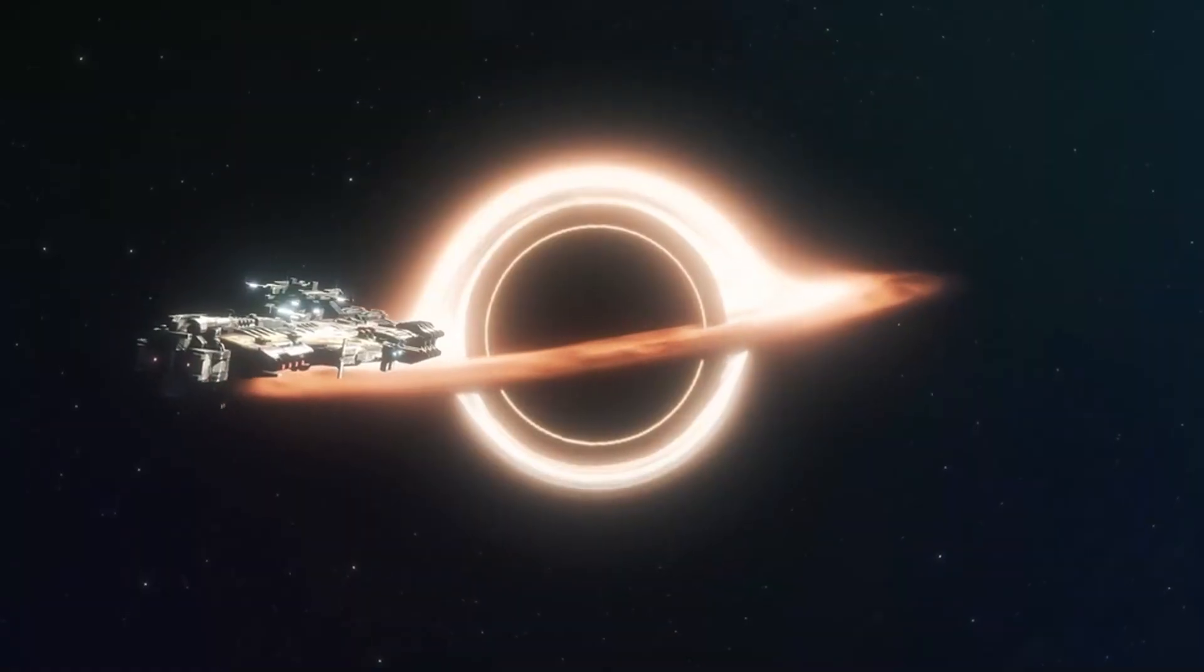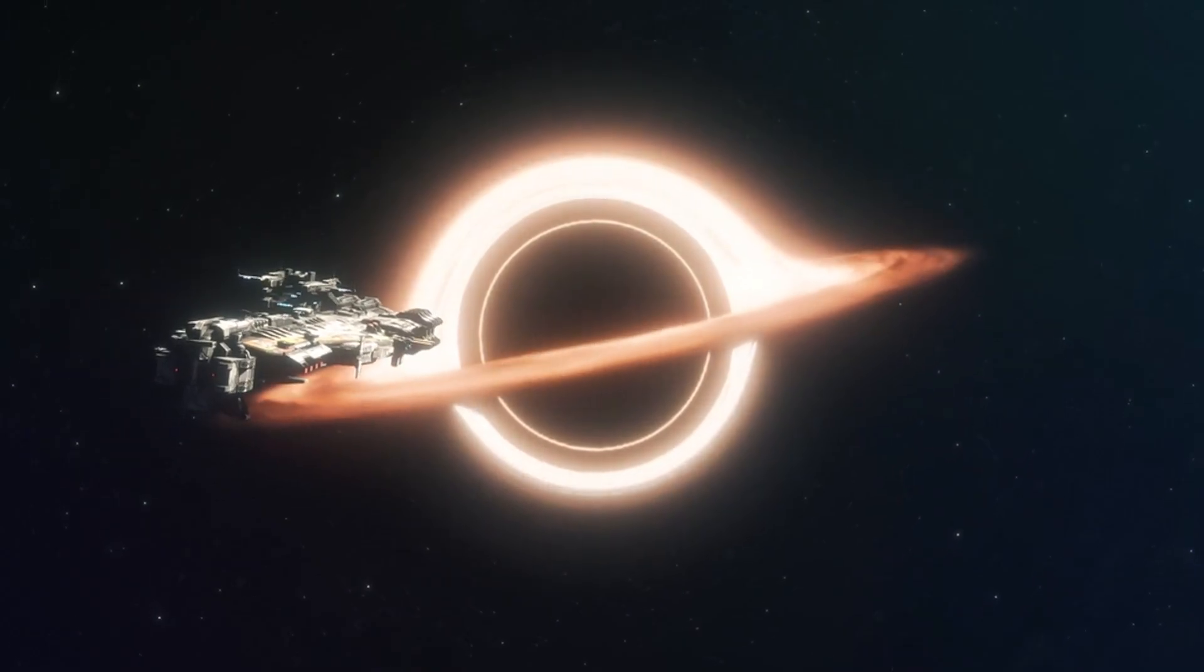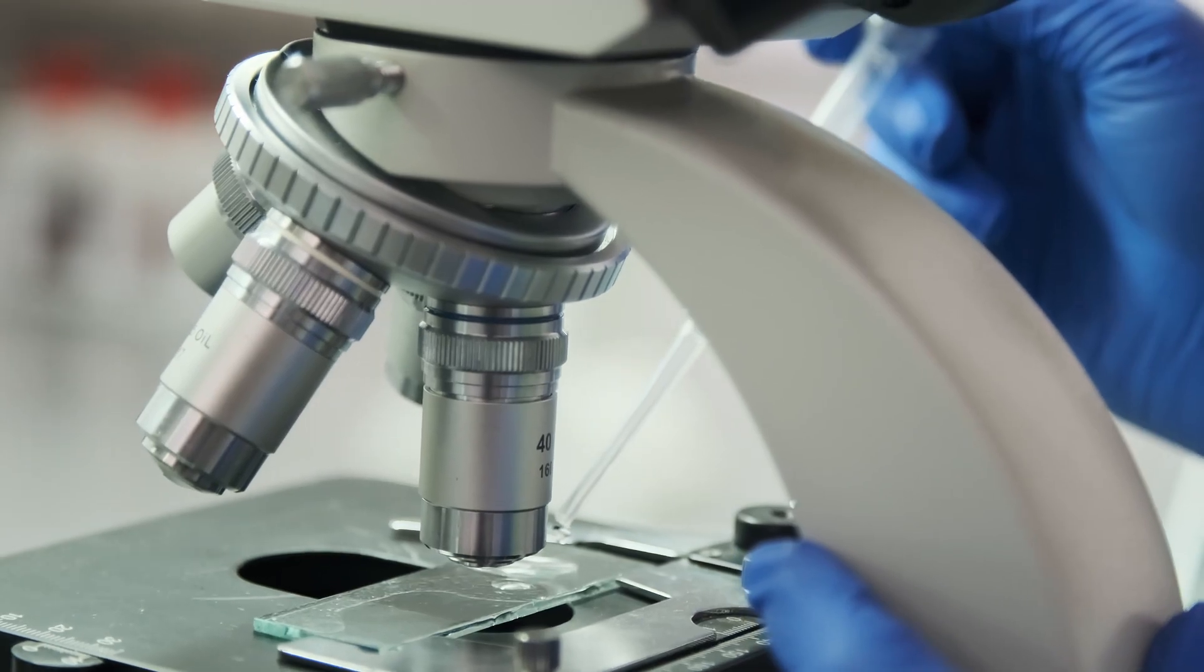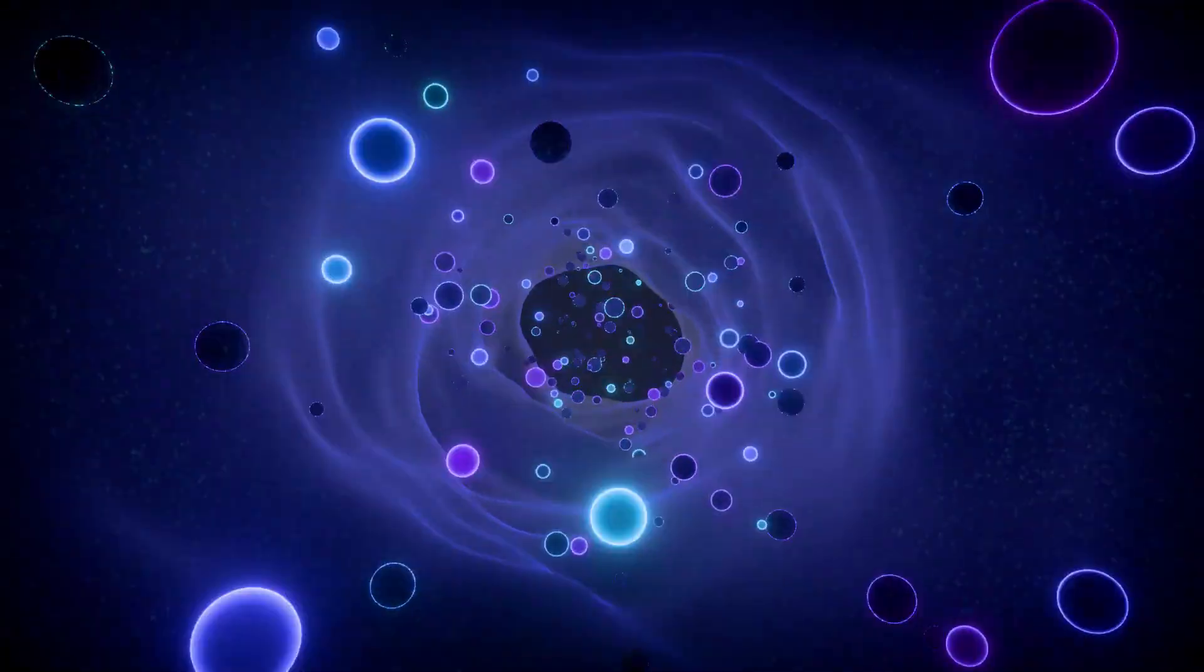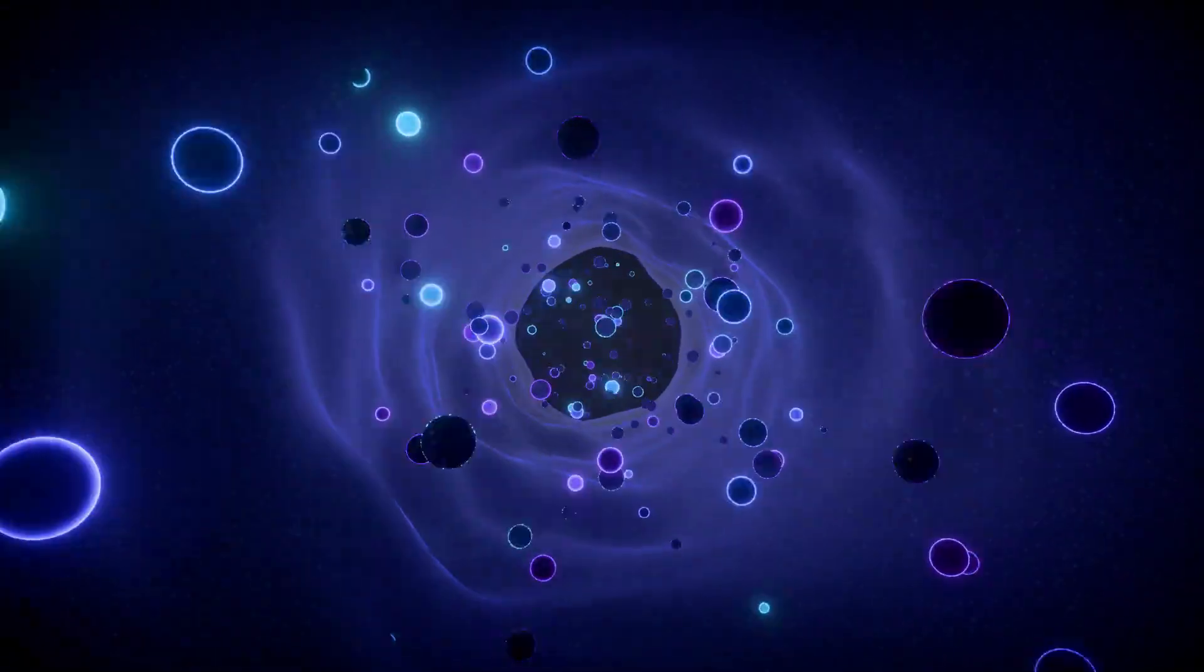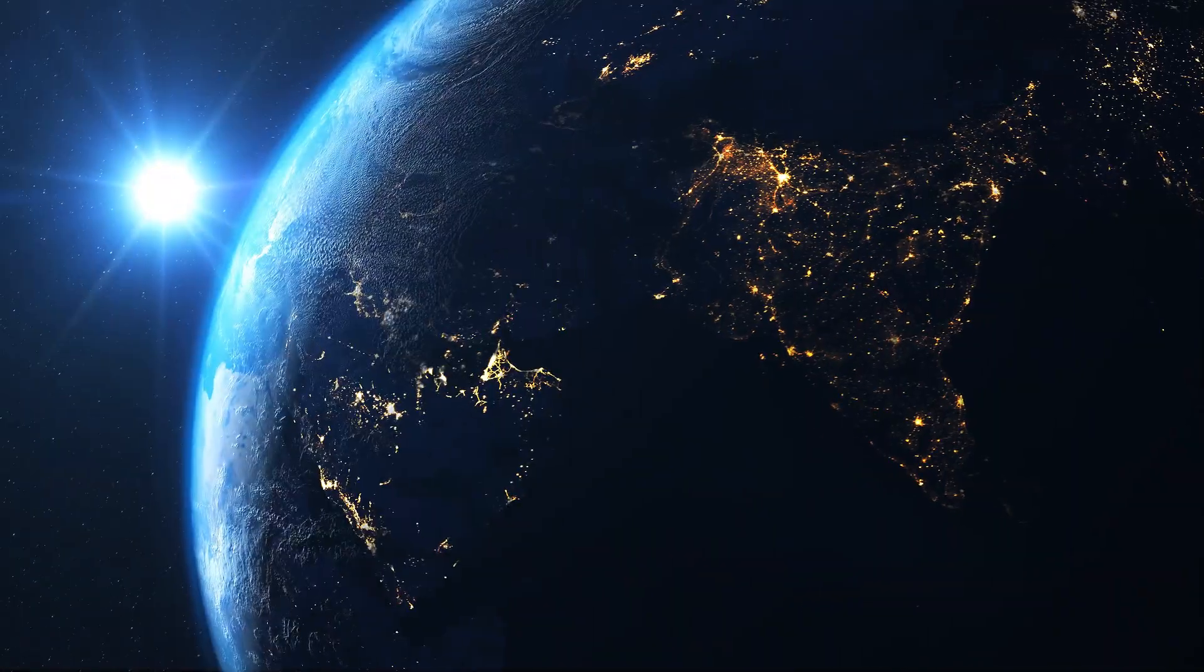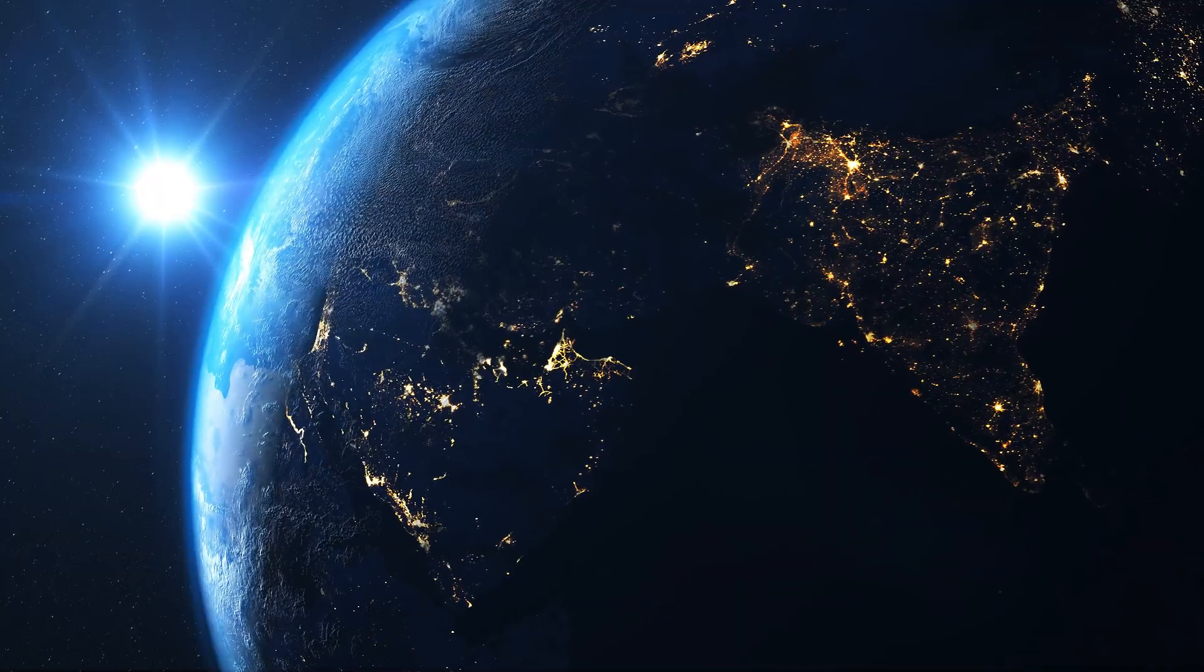Complex internal pockets that act like resonant chambers for gravitational and electromagnetic energy. If true, this would make Neptune unlike any planet we've ever studied. Instead of a solid or smoothly compressed sphere, it could be a multi-chambered system, a kind of cosmic labyrinth where forces echo, churn, and interact in completely unpredictable ways.